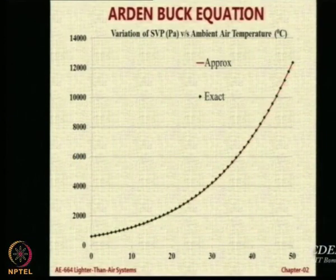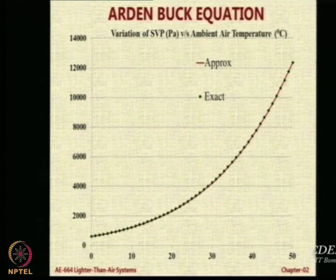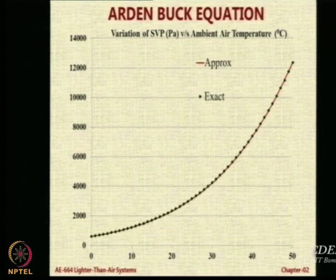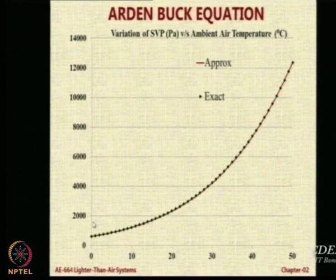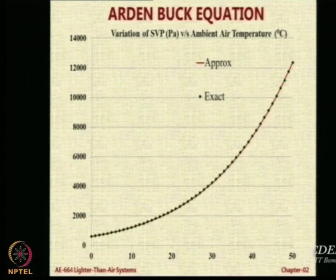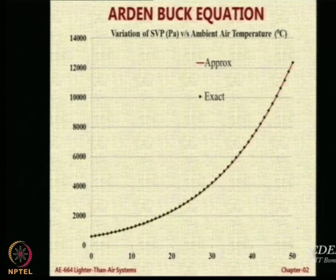On the y-axis we have the saturation vapor pressure, either SVP or E_s. On the x-axis we have temperature, and if you look at the ambient condition around 15 degrees Celsius, the saturation vapor pressure is around 1700 Pascals or so. So at an ambient pressure of 1700 Pa, that will be the saturation vapor pressure value.